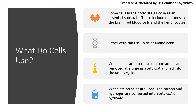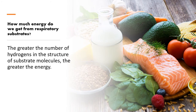Other cells are able to use lipids or amino acids, which is what ketogenic diets are based on. When lipids are used, two carbon atoms are removed at a time as acetyl and fed into the Krebs cycle. When you use amino acids, the carbon and hydrogen are converted into acetyl or pyruvate and then go through the Krebs cycle. The key thing to always bear in mind is that the greater the number of hydrogens in the structure of substrate molecules, the greater the energy.